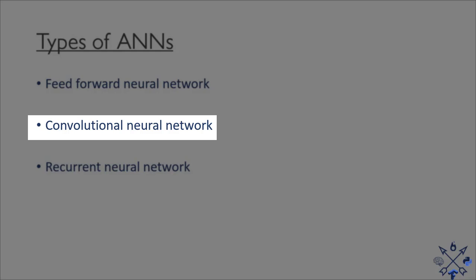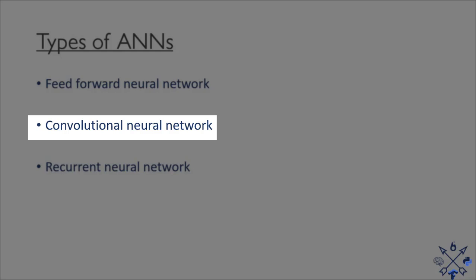Last but not least we have recurrent neural networks. The connections in a recurrent neural network form loops and these networks have a state. The loops in the network give feedback making these networks ideal for solving sequence prediction problems such as handwriting and speech recognition.